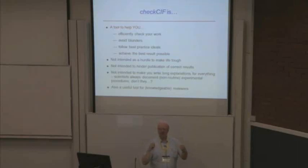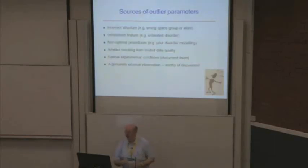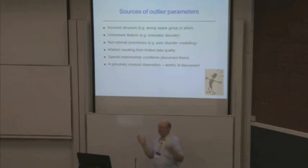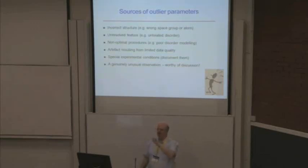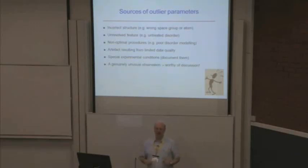At the same time, reviewers can use this. The shoe is on the other foot sometimes — you are reviewing papers and it's a tool to help you look at what the authors have been doing. There are many sources of outlier parameters and incorrect structures — some feature like disorder that you haven't treated fully could lead to validation alerts, or you're using non-optimal procedures. Or it could be some real unusual observation, and if that's the case, then it's a good thing to discuss.